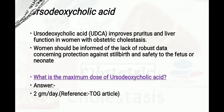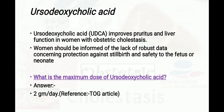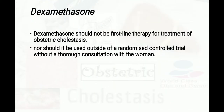Ursodeoxycholic acid improves pruritus and liver function in women with obstetric cholestasis. Women should be informed of the lack of robust data concerning protection against stillbirth and safety to the fetus or neonate. The maximum dose of ursodeoxycholic acid is 2 grams per day. Dexamethasone should not be first-line therapy for obstetric cholestasis, nor should it be used outside a randomized controlled trial without thorough consultation with the woman.